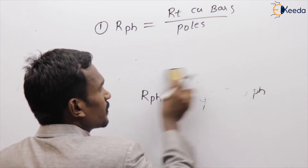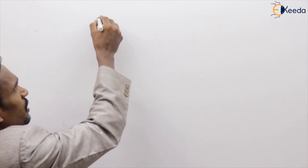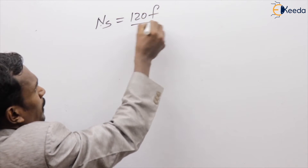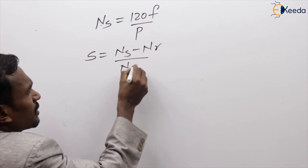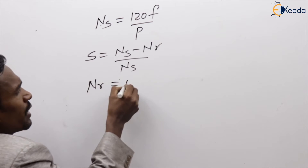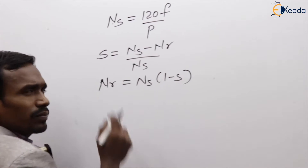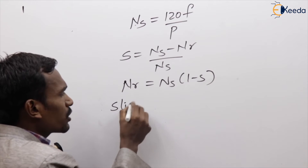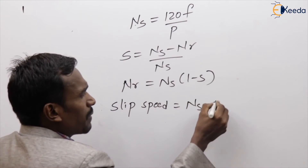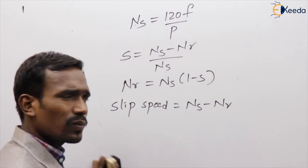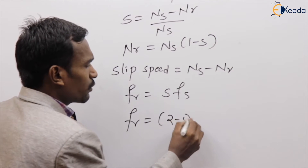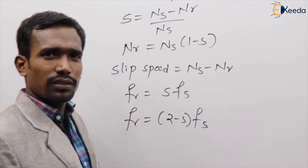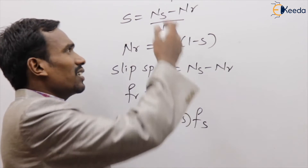Next, the second formula — speed equations. We have NS equals 120F by P, and S equals (NS minus NR) by NS, and NR equals NS into (1 minus S). Rotor frequency for positive sequence is S into Fs, and rotor frequency for negative sequence is (2 minus S) into Fs. These are the main speed equations.